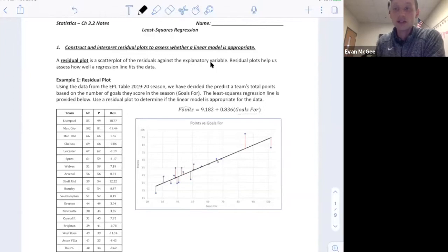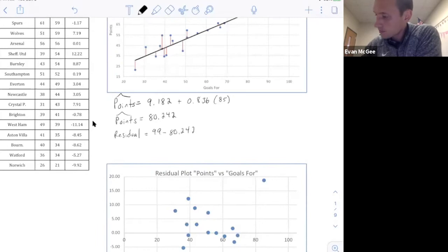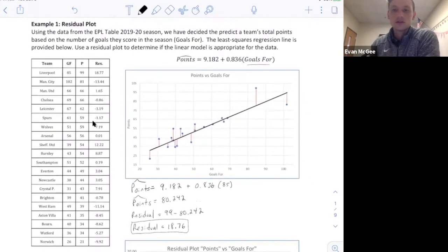So we're going to find the residual. For example, let's remember how to find the residual. We'll look at Liverpool here and we're going to find the residual for Liverpool's score, their points, based on their goals for. You can see the residual for Liverpool was 18.76. We plugged in how many goals they scored and predicted that they would score 80 points in the season. But since they scored 99 points, they scored 18.76 more points than we expected.